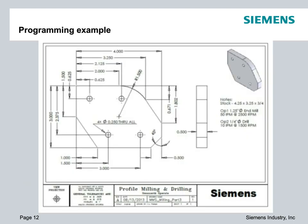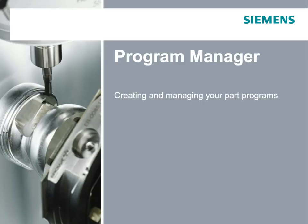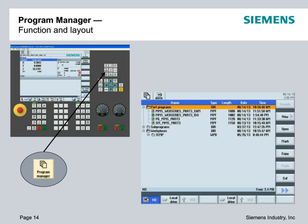This is an example of the part we're going to methodize. We'll profile mill around the part, then center drill or spot drill four holes, then drill four holes. The first thing we're going to look at is our program manager area. Program manager allows you to go in and physically start creating programs, managing where programs exist, and moving files back and forth — things sitting on a USB, a local drive, or a network drive.